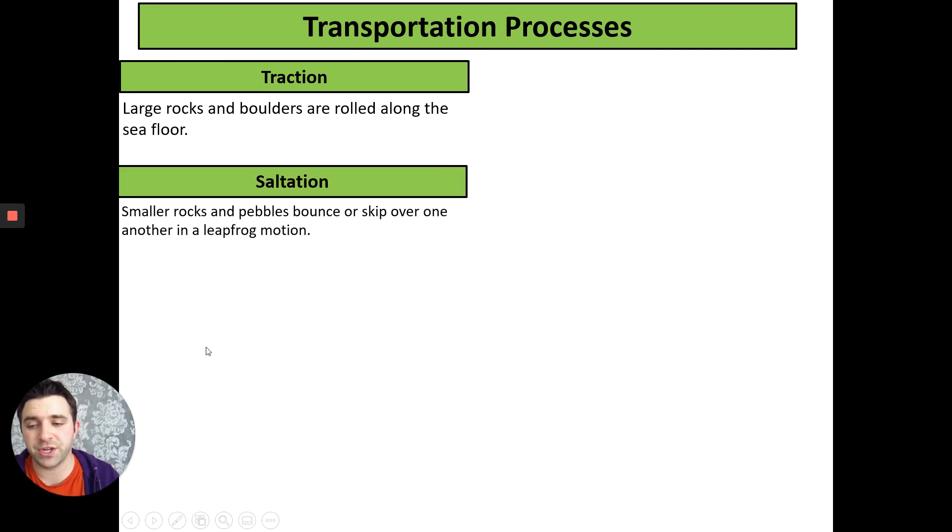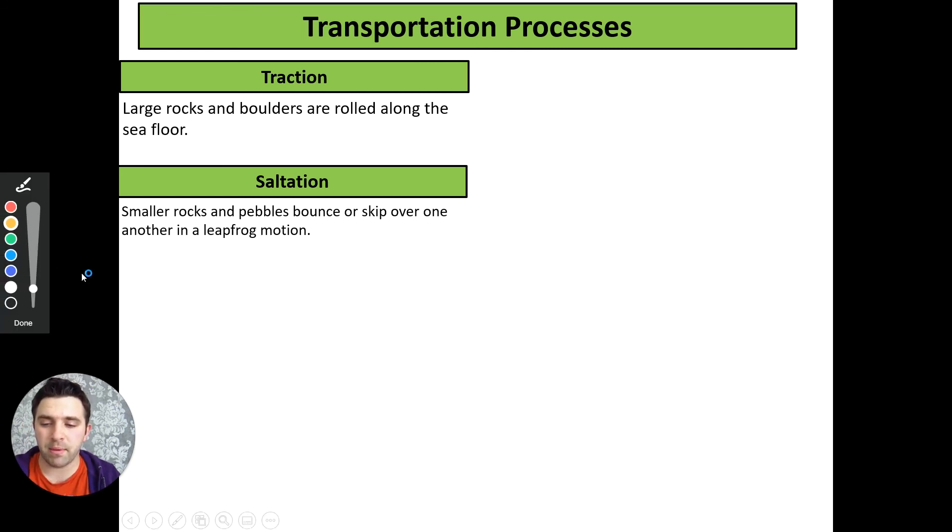Our second type of transportation is saltation. This is where smaller rocks and pebbles bounce or skip over one another in a leapfrog motion. Here's a small pebble, here's another small pebble. It bounces along the seabed, jumping over it, and then this one will jump over here and carry on. They just keep bouncing, jumping and skipping along the seafloor.